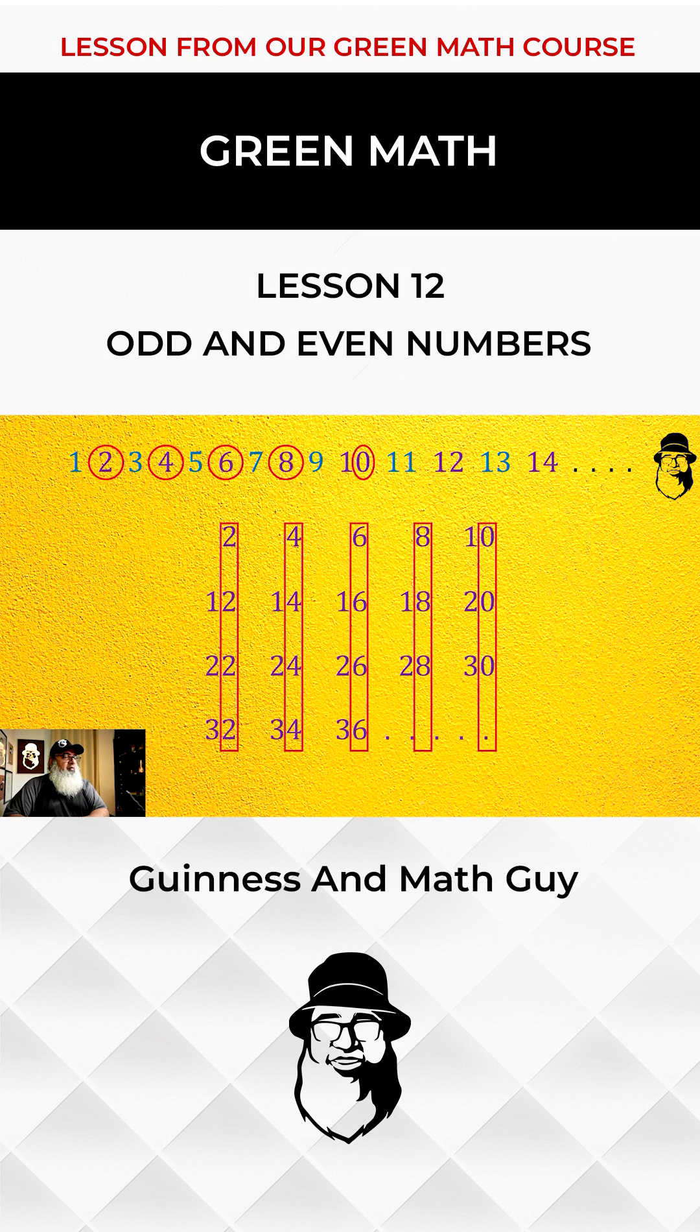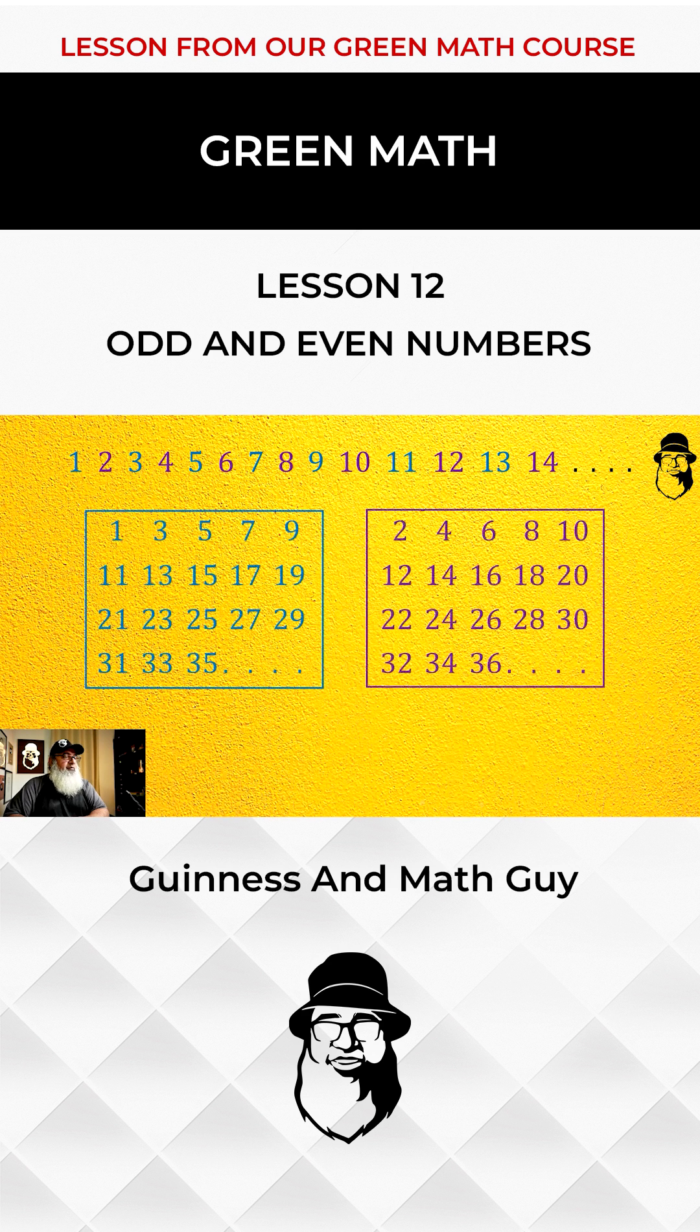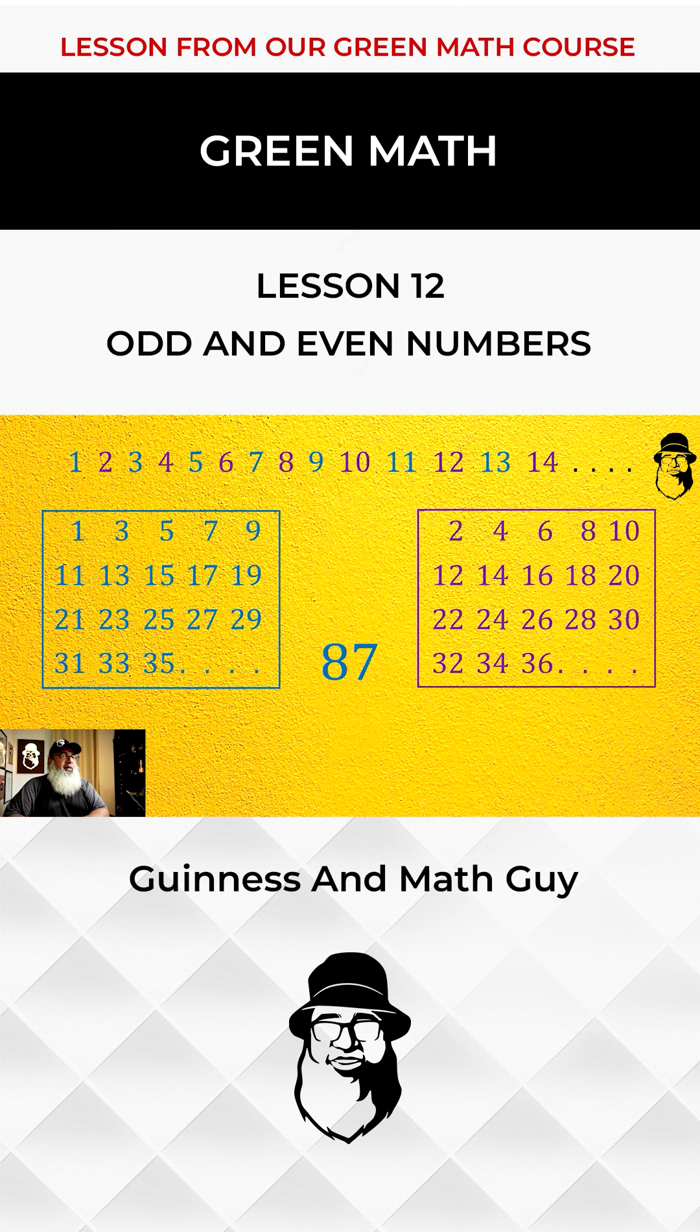So we can easily tell if a number is odd or even by just looking at the last digit. For example, 87 is an odd number because it ends in an odd number that is 7.